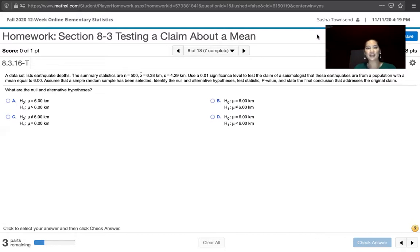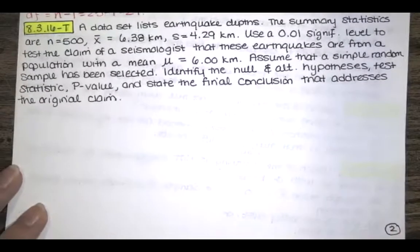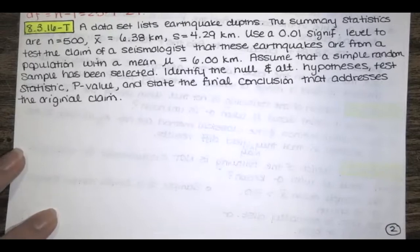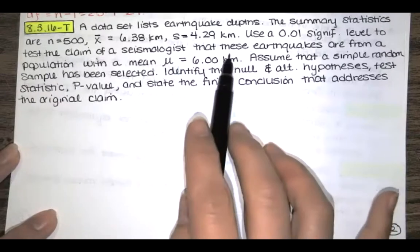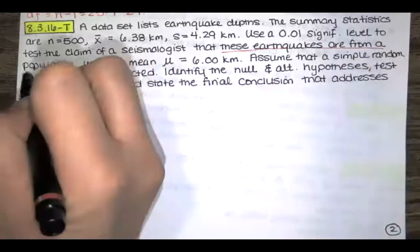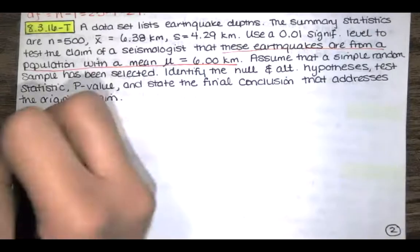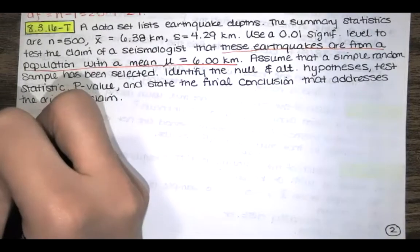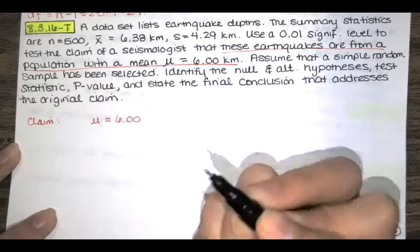The first thing we want to do is identify the claim so that we can use it to infer the null and alternative hypotheses. The seismologist claims that these earthquakes are from a population with a mean equal to 6.00 kilometers. So the claim is that the mean is equal to 6.00 kilometers.